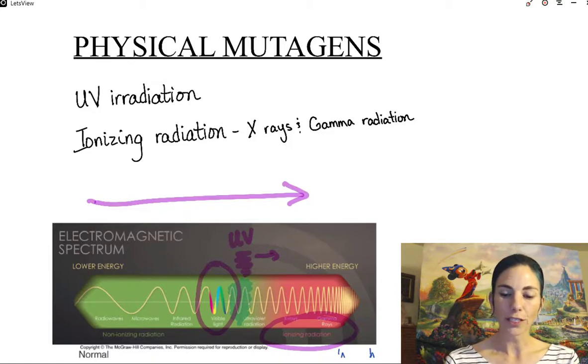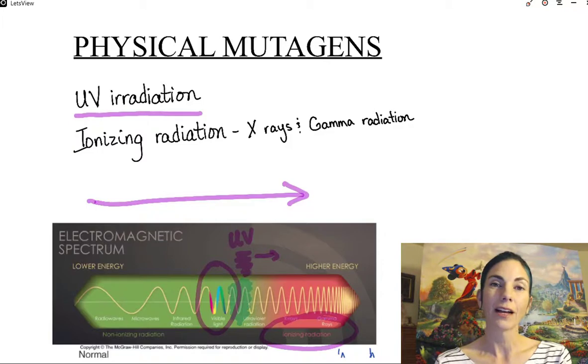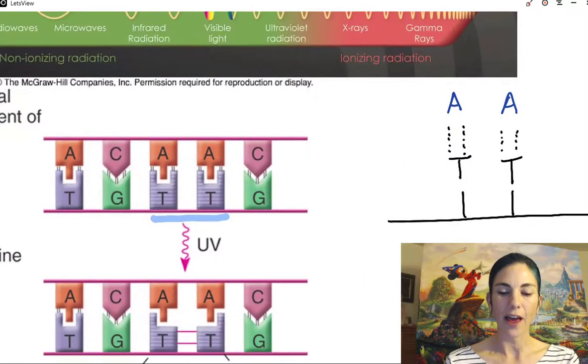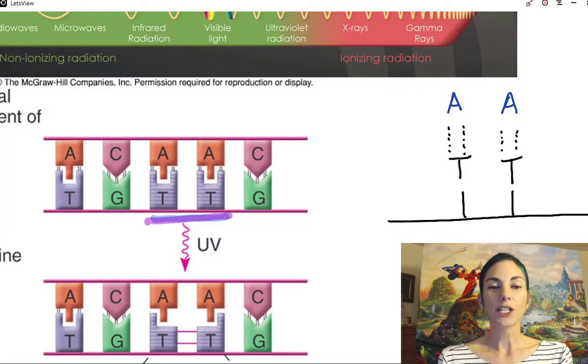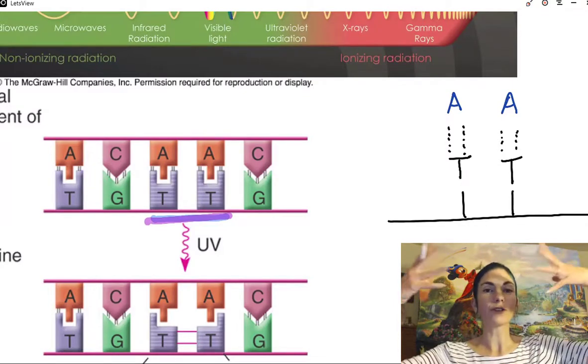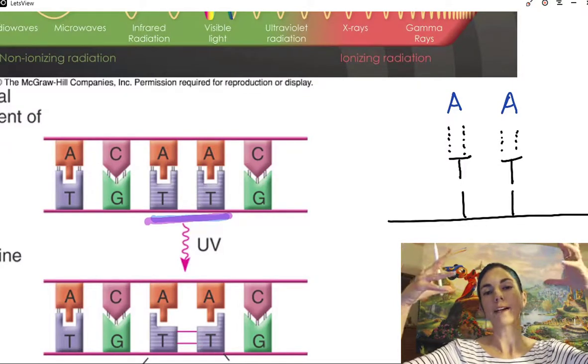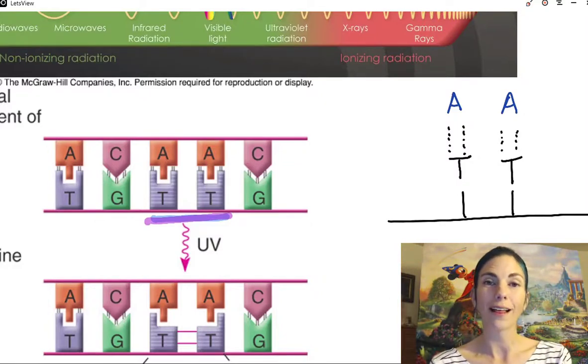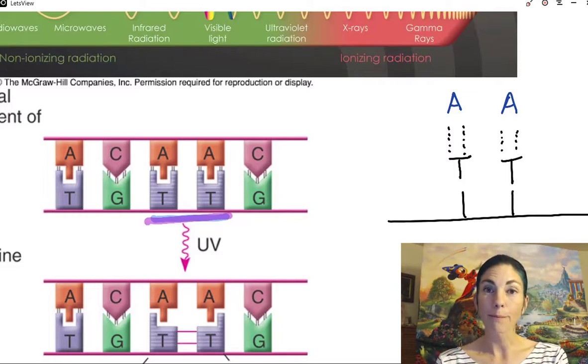So let's first take a look at how UV irradiation causes mutations. So when UV irradiation hits two adjacent thymines, like I'm shown here, the two adjacent thymines can have their electrons excited. And when the electrons fall back down, sometimes they actually fall back down together such that a new covalent bond is formed between the adjacent thymines.